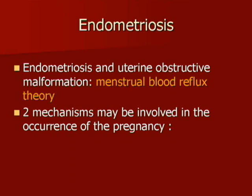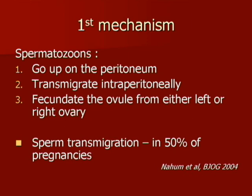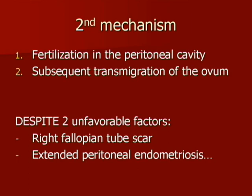Two mechanisms may be involved in the occurrence of this pregnancy. The first supposes that spermatozoa travel up to the peritoneum by the right permeable fallopian tube, transmigrate intraperitoneally, and fertilize the ovule released by either the left or right ovary. It was shown that intraperitoneal sperm transmigration occurs in 50% of all cases of human pregnancy. The second mechanism supposes that fertilization might have occurred within the peritoneal cavity with subsequent intraperitoneal transmigration of the resulting fertilized ovum and contralateral tubal pickup. It is worth noting that despite extended active endometriosis and the recent antecedent of right salpingotomy, pregnancy could occur in the left uterine horn.